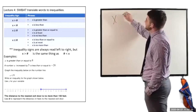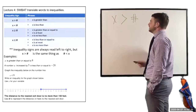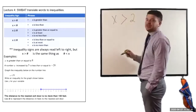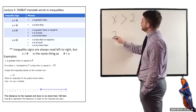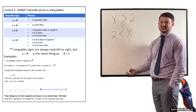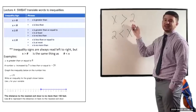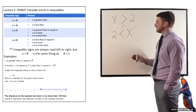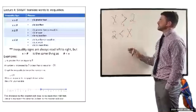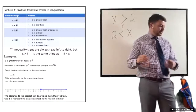So, for this first one, we have X, and then this sign, and then some number. This would read X is greater than some number. Let's put an actual number in — like two. So, X is greater than two. That's the same thing as saying that two is less than X. These are the exact same, but the way that we read them is not exactly the same. The top reads as X is greater than two, and the bottom reads two is less than X. But at the end of the day, they're the exact same thing.